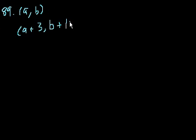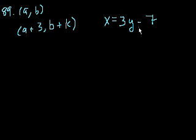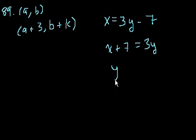Problem 89. In the xy coordinate system, if (a, b) and (a + 3, b + k) are two points on the line defined by the equation x is equal to 3y minus 7, then k is equal to what? I think an easier thing to do is to define y in terms of x. So you get x plus 7 is equal to 3y. y is equal to 1/3 x plus 7/3.